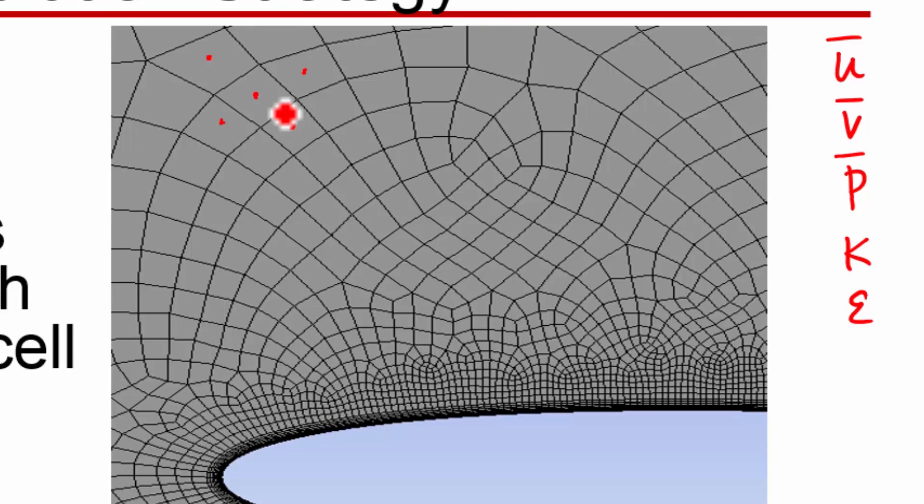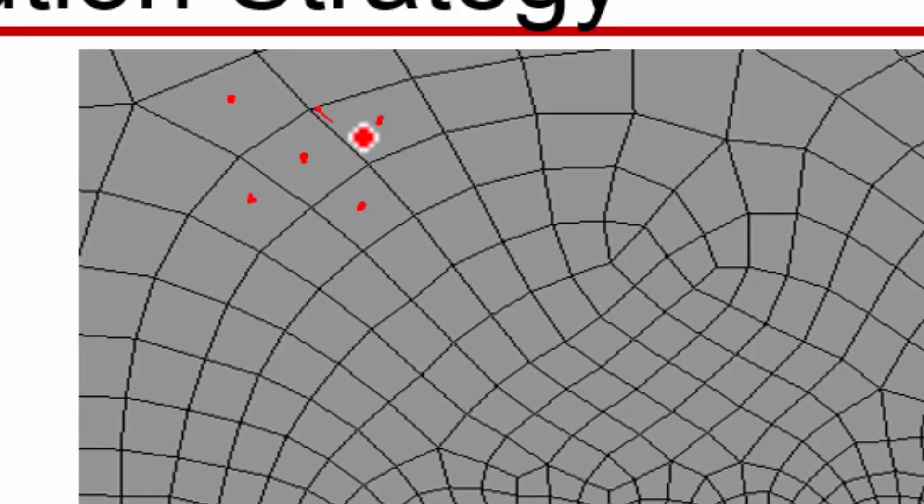For momentum, when it's calculating the forces at each face of the control volume, it needs to calculate not only the viscous forces on that face, it also needs to calculate the forces due to the turbulent stresses. And for that it needs to know the eddy viscosity that comes from k and epsilon.